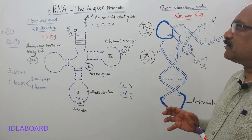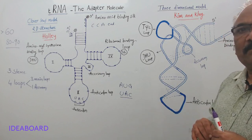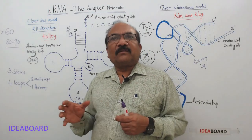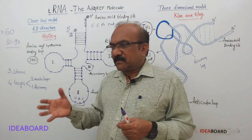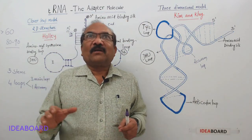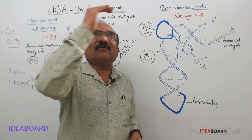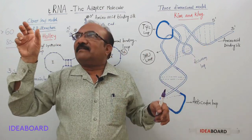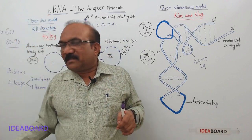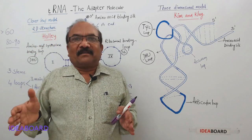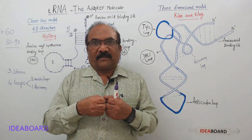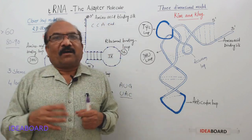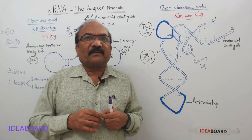Transfer RNA plays a very important role during protein synthesis, especially during translation. It brings the amino acids and arranges them according to the codon sequence on mRNA. According to each codon, the tRNA brings the corresponding amino acid, and thereby amino acids get attached to each other with the formation of peptide bonds. The translation process will be discussed in the next video.